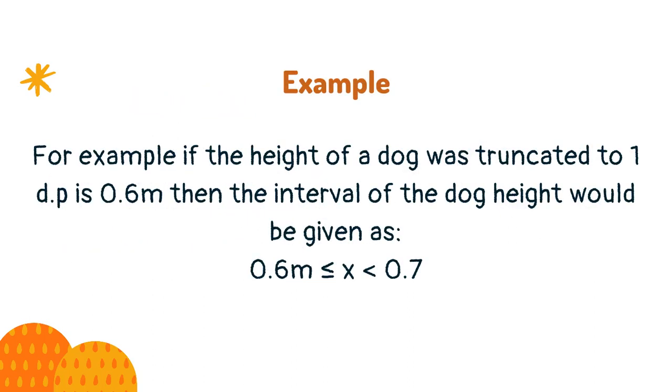For example, if the height of a dog was truncated to 1 decimal place is 0.6 meters, then the interval of the dog height would be given as 0.6 meters ≤ x < 0.7.